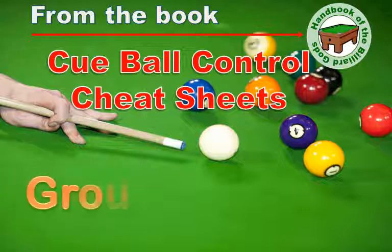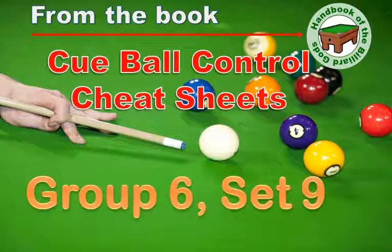This is from Group 6, Set 9. There are four shots in this set. The purpose for each setup is simple: put the one ball into the pocket, then get shape and make the two.